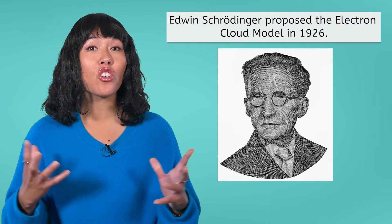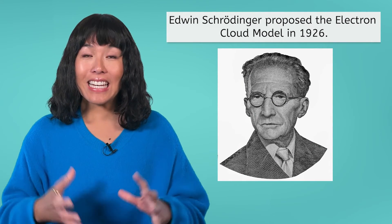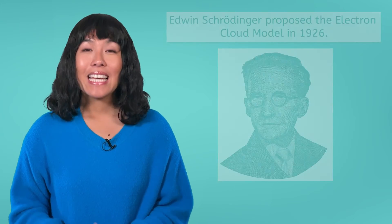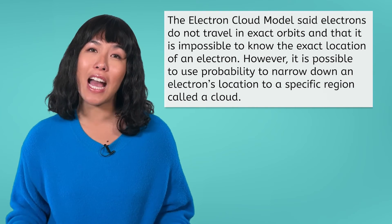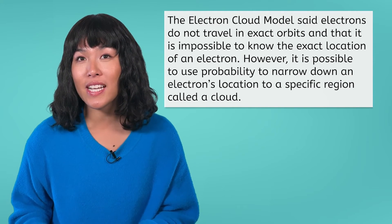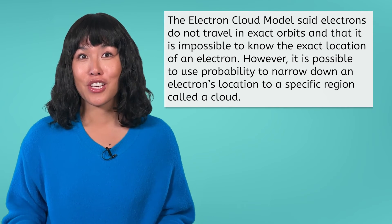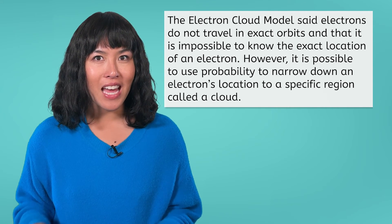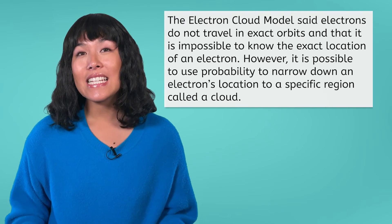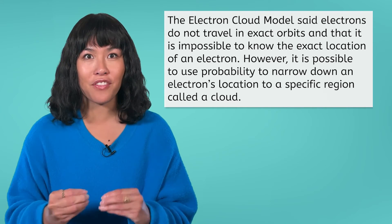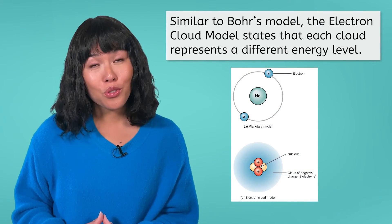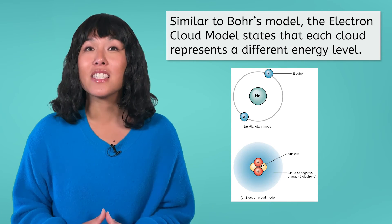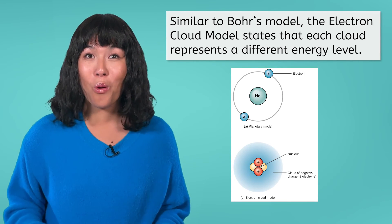In 1926, Edwin Schrödinger proposed what is our current theory of the atomic model: the electron cloud model. In his theory, Schrödinger proposed that electrons do not travel in exact orbits, and that it is impossible to identify the exact location of an electron at any given moment. However, he was able to use probability to narrow down the location of each electron in an atom to specific regions, which he named clouds. He also determined that each cloud has a different energy level, building on Bohr's idea.